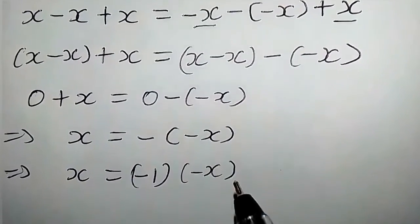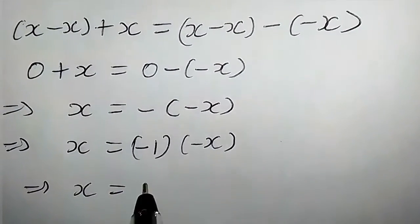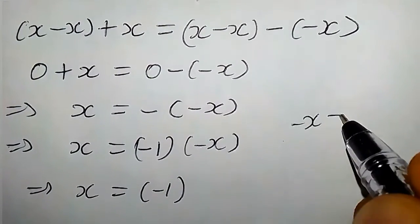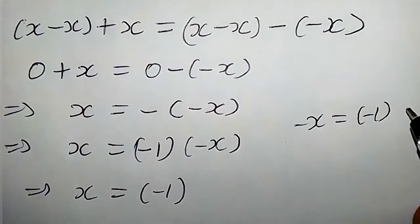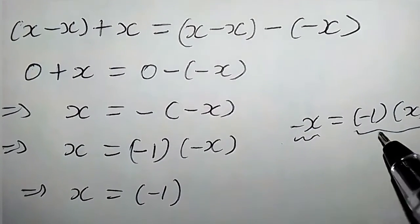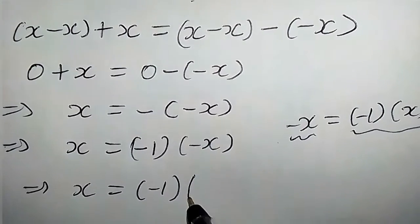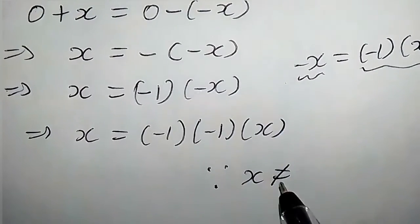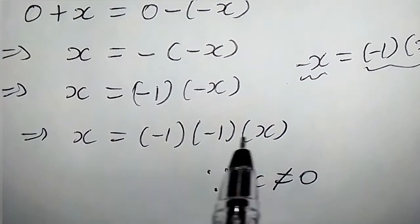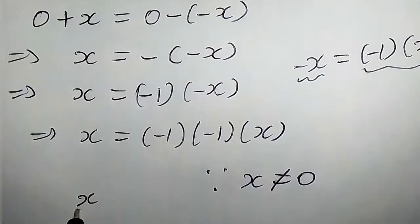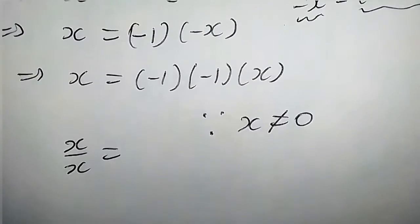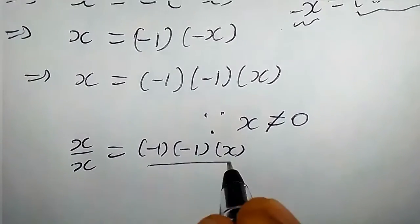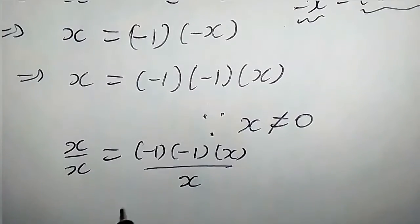This implies that x equals negative 1 times minus x. Also, negative x is the same thing as writing negative 1 times x. So we're going to replace negative x with negative 1 times x. We'll then have negative 1 times negative 1 times x. Since x is not equal to 0, we can simply divide both sides of this equation by x, so we're going to have x over x equals negative 1 times negative 1 times x, all over x.